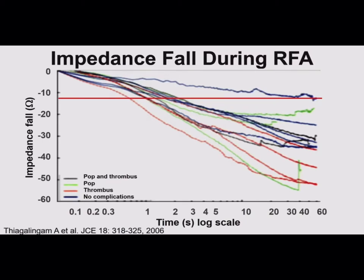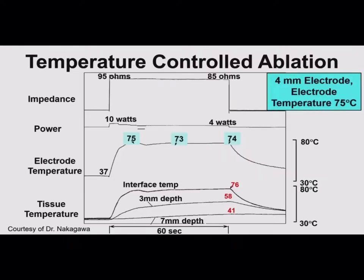In the atrium, maybe 5 to 8 ohm impedance drop. In the ventricle, maybe 10 to 12. If you want to get really deep, you might push it to 12 to 15. But if you see an abrupt drop down to 18, that's where you want to come off or back off on the power, because if you keep coming down, that's when you'll get one of those steam explosions.